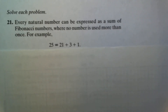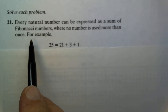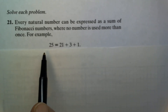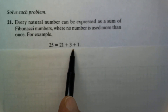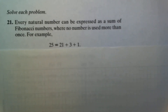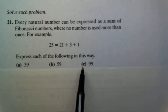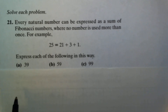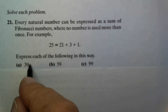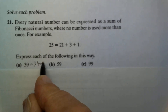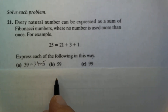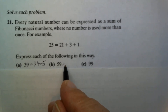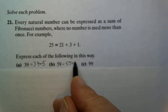Let's look at some exercises with Fibonacci numbers. Every natural number can be expressed as a sum of Fibonacci numbers where no number is used more than once. For example, 25 equals 21 plus 3 plus 1. Express each of the following numbers in this way: 39 can be represented as 34 plus 5. These representations are not unique — we can express them in different ways. 59 can be represented as 55 plus 3 plus 1.